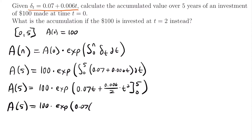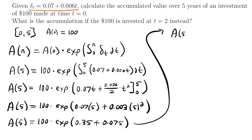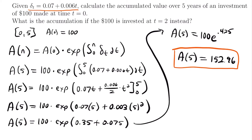Plugging in 5: 0.07 × 5 = 0.35, and 0.003 × 5² = 0.003 × 25 = 0.075. Adding those: 0.35 + 0.075 = 0.425. So A(5) = 100 · e^0.425 = $152.96. That is the accumulation at year five given an initial deposit of $100 at time zero with that force of interest.